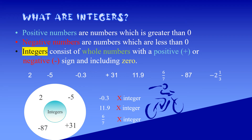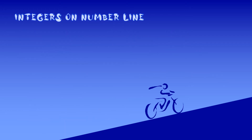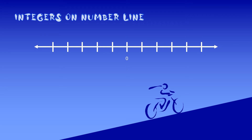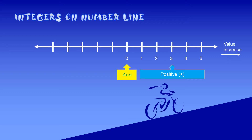Negative 87 is an integer. Negative 2 and 1 over 3 is not a whole number, so it is not an integer. I hope you can now identify which numbers are integers and which are not. Next, integers on the number line. Zero is in the middle. On the right side: 1, 2, 3, 4, 5 — these are positive integers. On the left side: negative 1, negative 2, negative 3, negative 4 — these are negative integers. The further left you go, the smaller the value.